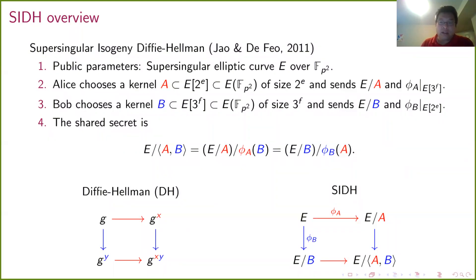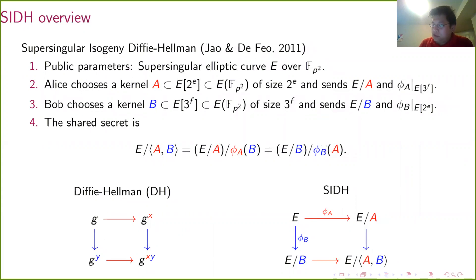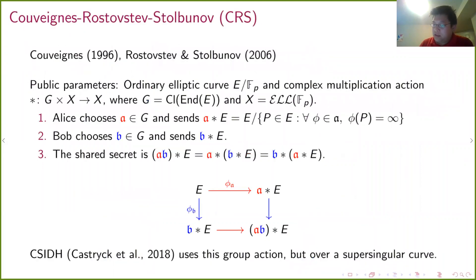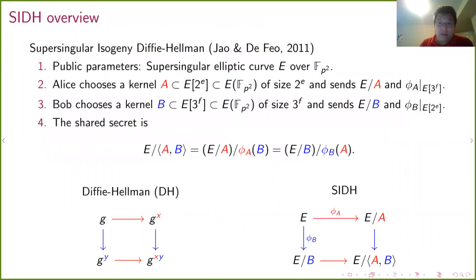Now I'll start with the cryptosystems we're going to discuss. The first is called SIDH — Supersingular Isogeny Diffie-Hellman. It's the cryptosystem that Luca De Feo and I devised in 2011. It's not actually the first isogeny-based cryptosystem — the first is an earlier one we now call CRS, which I'll explain on the next slide — but I'm going to talk about mine first because I can.